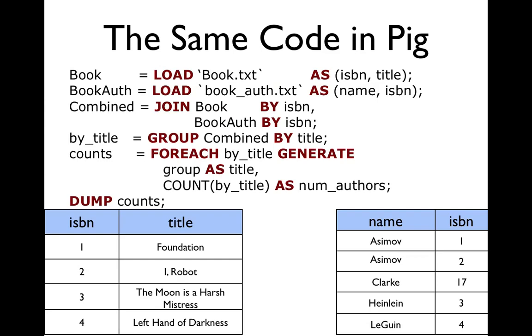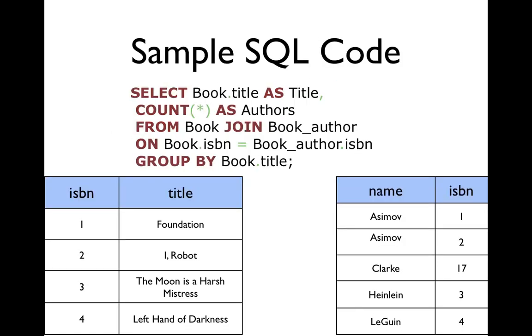For comparison now, here is the same code in Pig. You can see right up front, Pig is much more explicit about breaking the computation into steps. You load each data set and note that you declare the schema when you are loading it. Then the join happens and there's a new table that is created. Then the grouping happens and then you pull out the title and the number of authors.